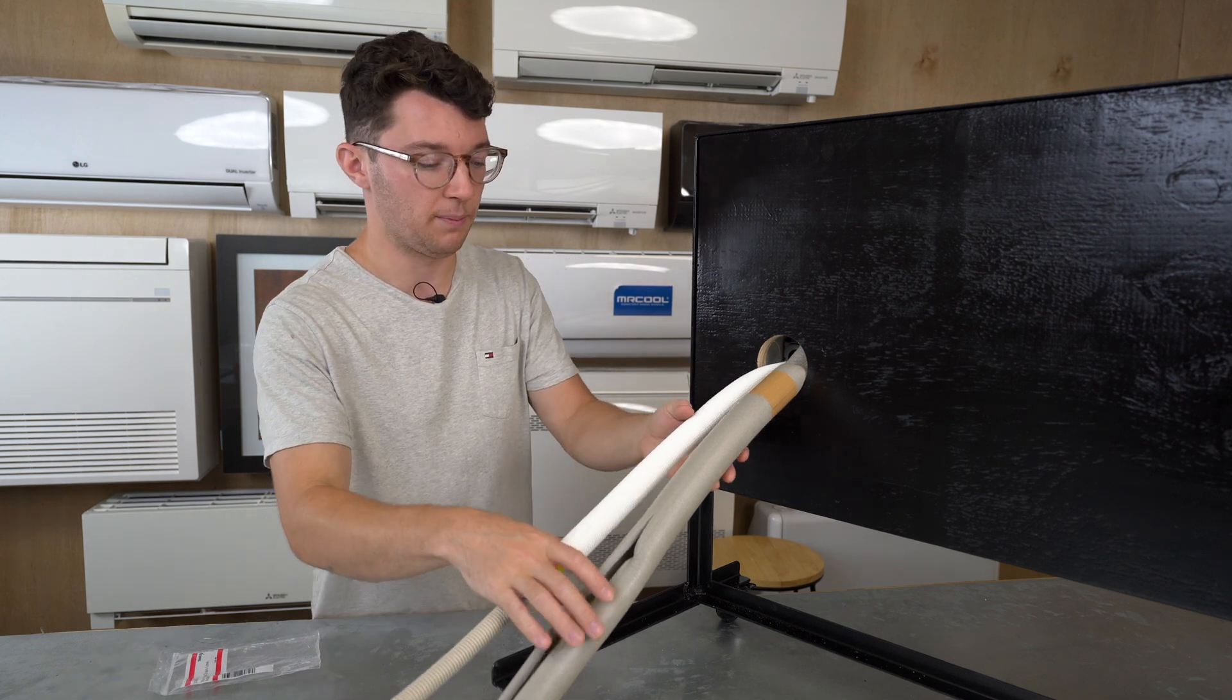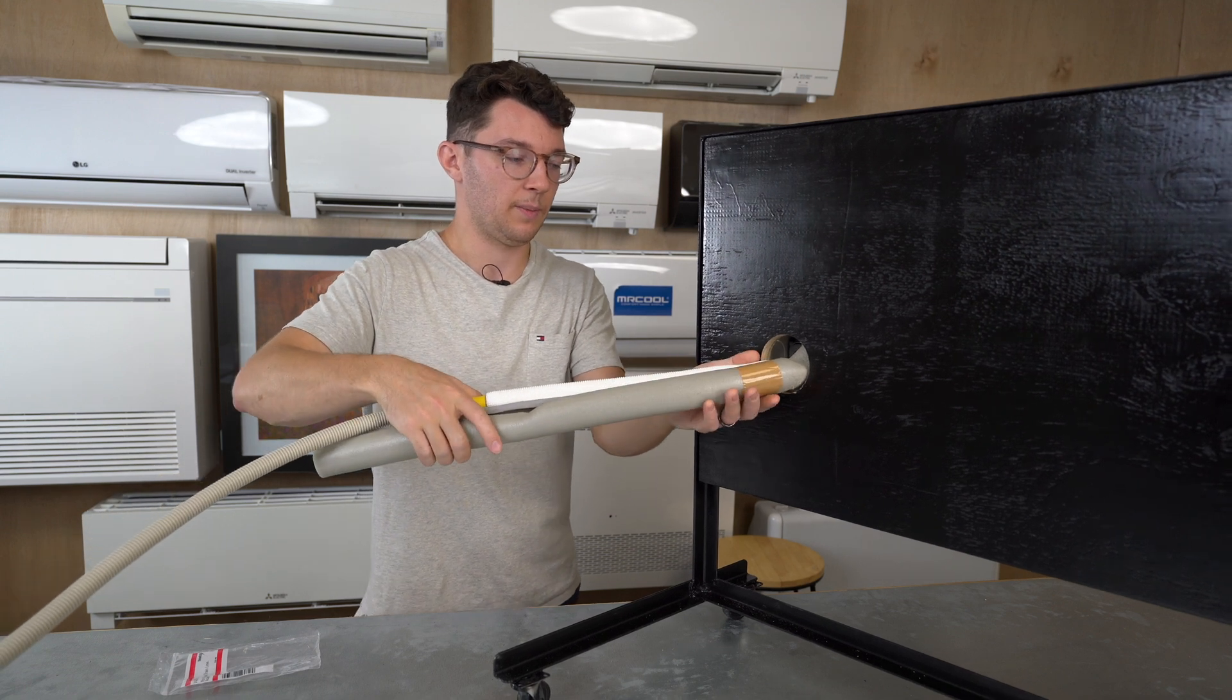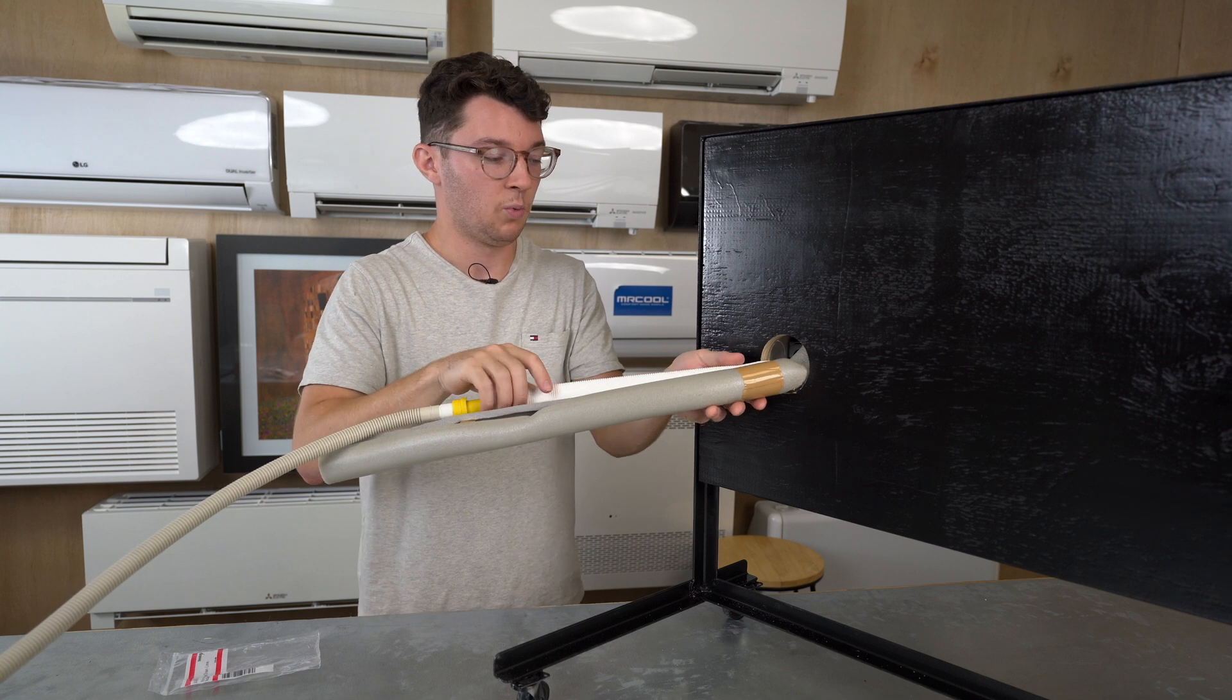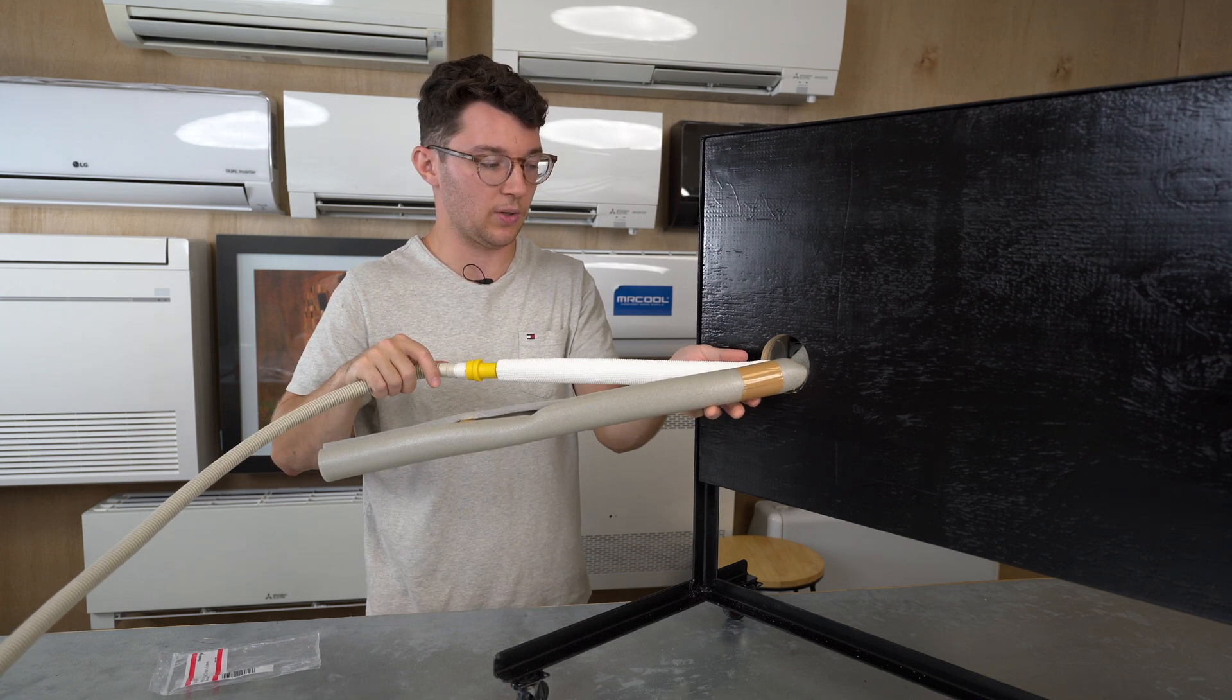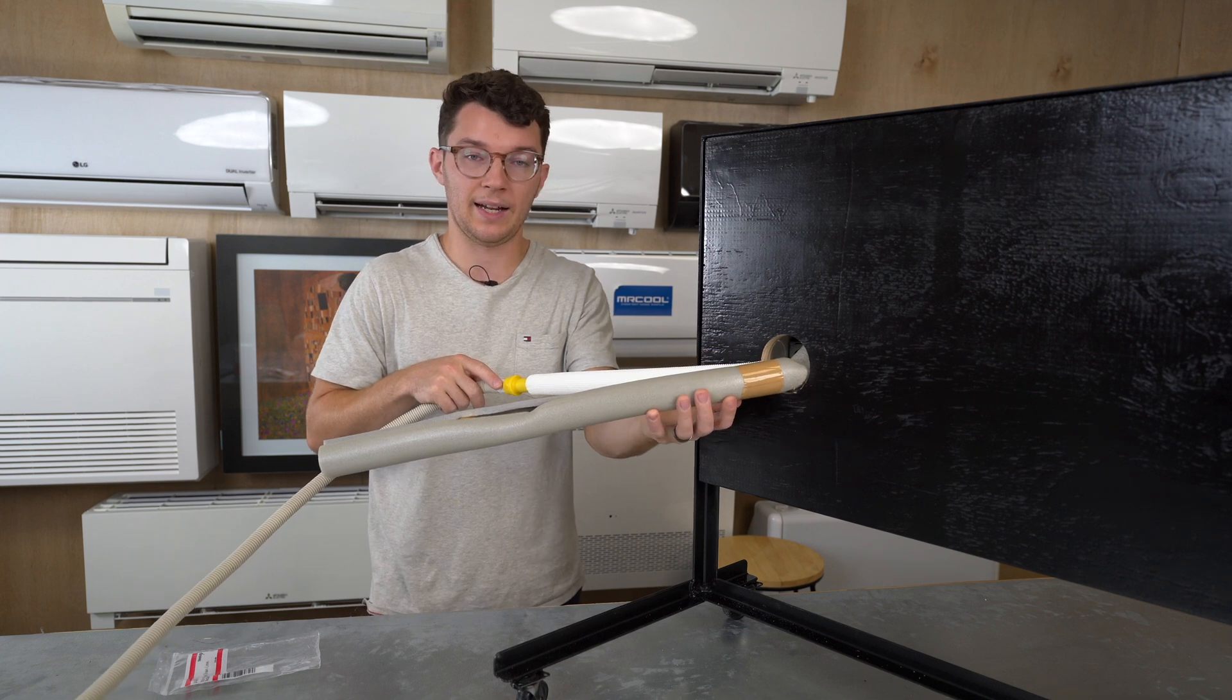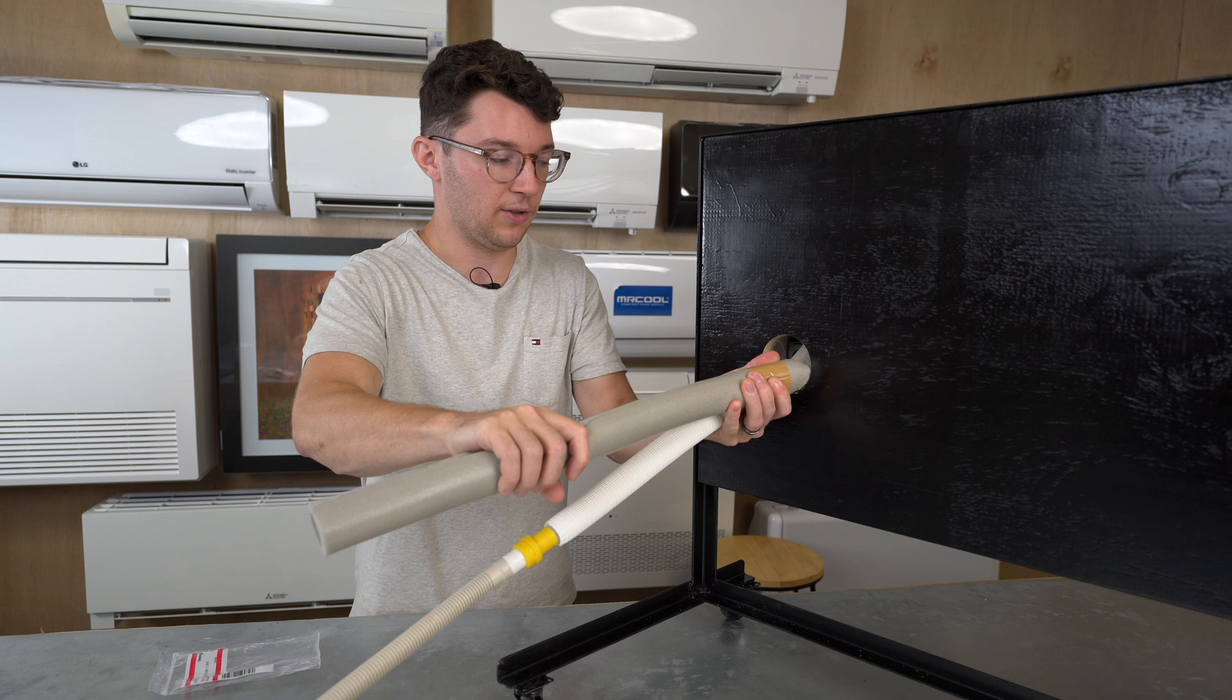If you have to run both your line sets to the left, you want to make sure you're not kinking the refrigerant line. But since we're not talking about that today, we want to make sure that the condensate hose is always going on the bottom of the line set that's running alongside it.